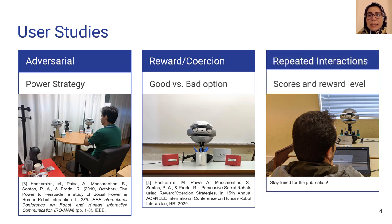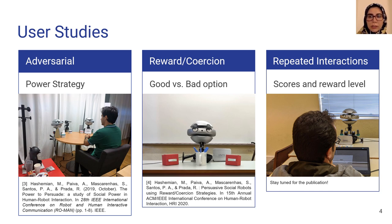And finally, in the last study, the robot was trying to persuade the user within a game scenario to select a higher challenging option. This study contains two control conditions.